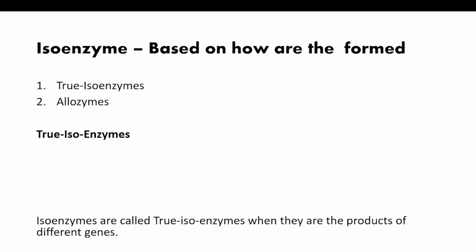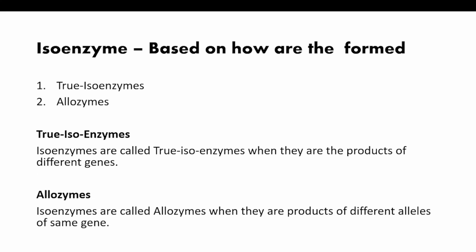Based on how they are formed, isoenzymes can be classified into true isoenzymes or allozymes. Isoenzymes are called true isoenzymes when they are the products of different genes — examples include salivary and pancreatic amylases. Isoenzymes that are products of different alleles of the same gene are called allozymes. Only one form will be present in one individual, whereas true isoenzymes will be present in all forms in an individual.